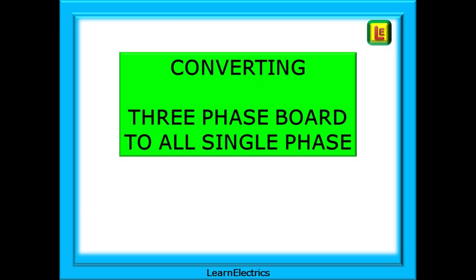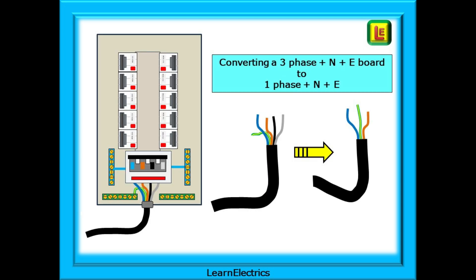In some of the smaller industrial units, they may only have a single-phase incoming supply. Can we convert the whole board to a single-phase board? Of course we can. Let's look at this. We have a three-phase plus neutral plus earth board, a five-wire board, but the incoming supply is only single-phase three wires, which are line plus neutral plus earth. What can we do?